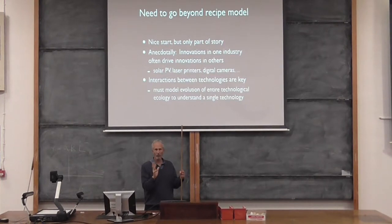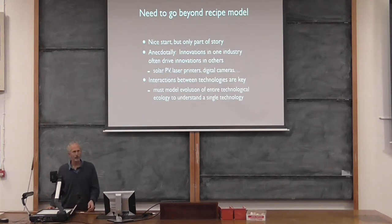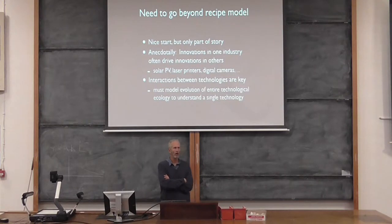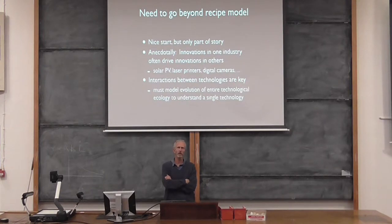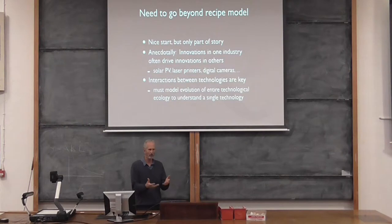Because an improvement in one domain, like semiconductors, can percolate throughout lots of domains. It may start in electronic devices and then go into computers, but then it ends up in things that you might not have predicted at all, like photography. Who would have thought that a modern photographic device would be a semiconductor device instead of a chemical device?